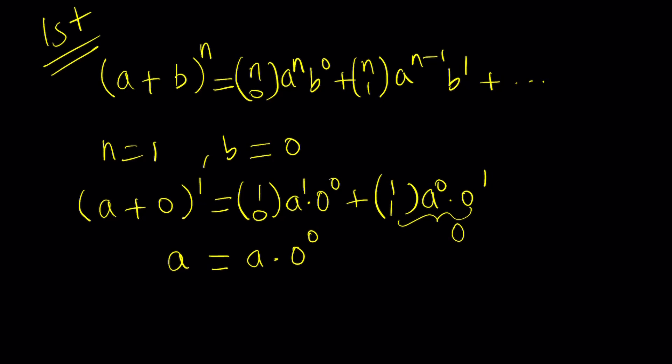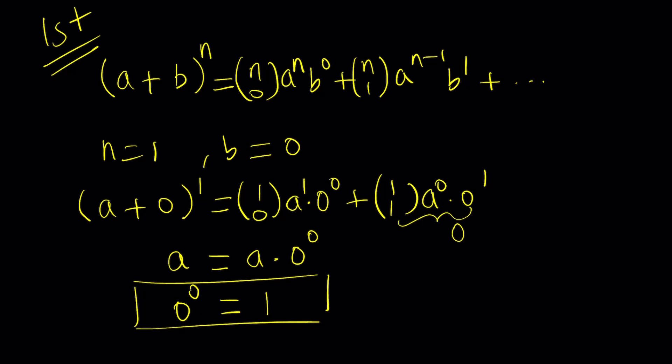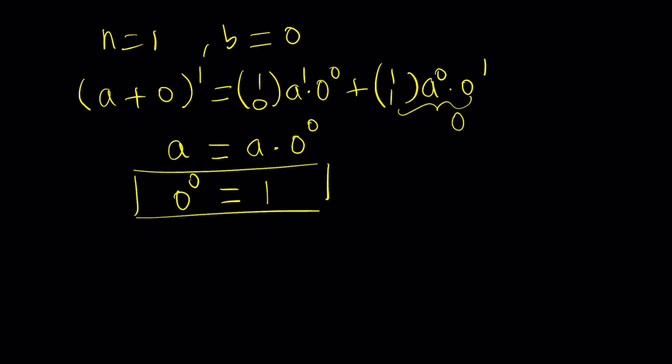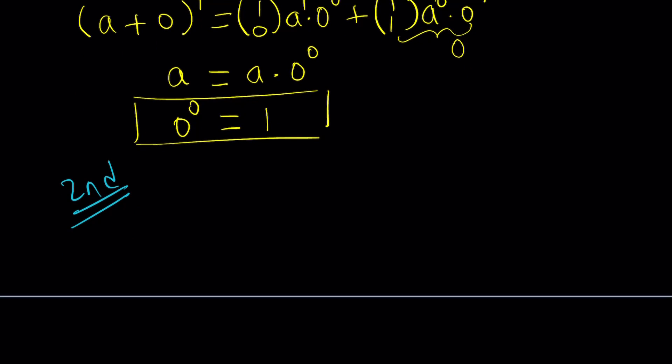We end up with: a = a · 0^0, and this can only be true if 0^0 = 1. Assuming a ≠ 0, a is any arbitrary number, so this shows that zero to the power zero equals one. We're going to look at it from three different perspectives and see what we get every time.